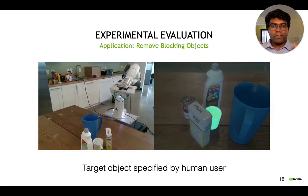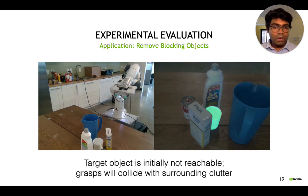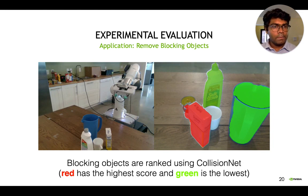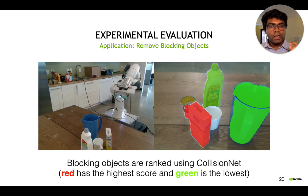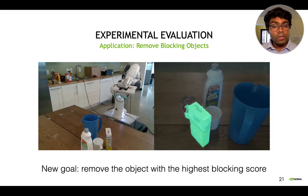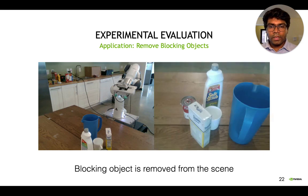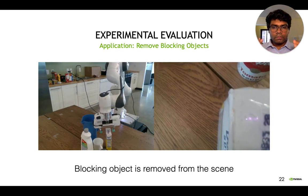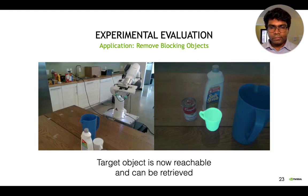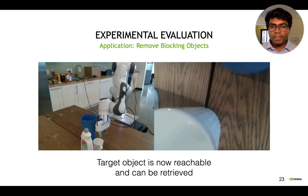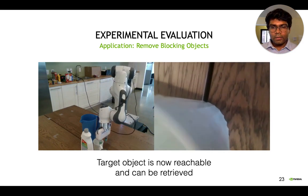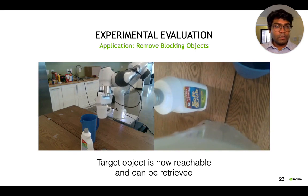Now I want to illustrate an interesting application where we specify the object to grasp, but unfortunately it's not reachable initially, and most grasps will collide with the surrounding clutter. What we can do is use Collision Net to reason about the blocking objects. For all objects in the scene, we see how the Collision Net score increases before and after removing each object from the scene, and this increase in score determines how objects are ranked. The new goal becomes removing the object with the highest blocking score. The robot goes in and removes this object, after which the original target object is un-occluded and can be reached. Even though the object isn't initially graspable, we can reason about moving objects out of the way to grasp the target.